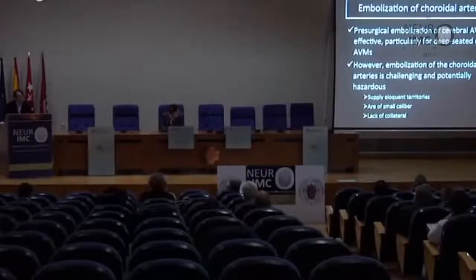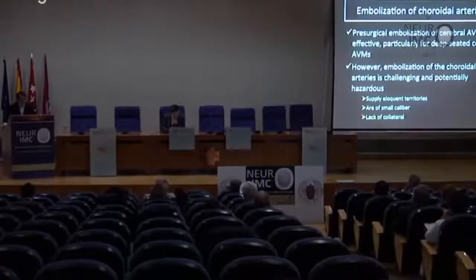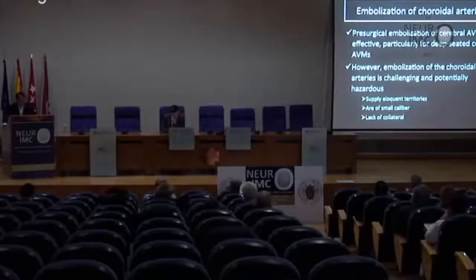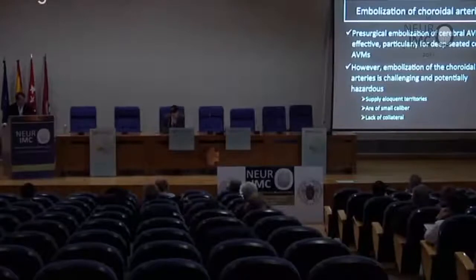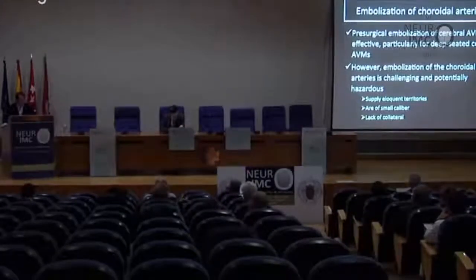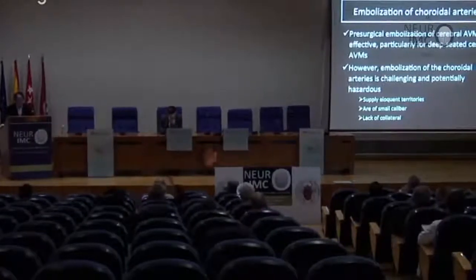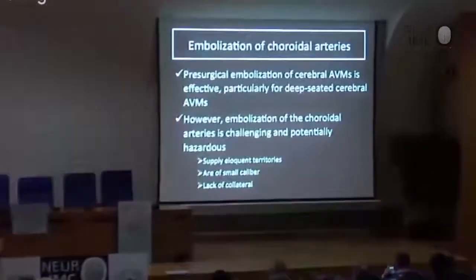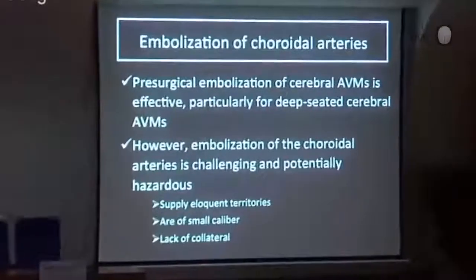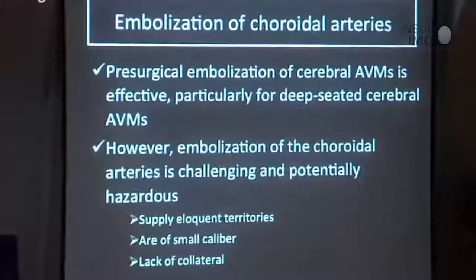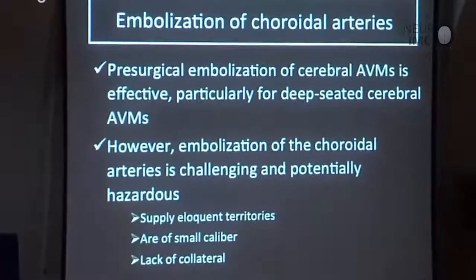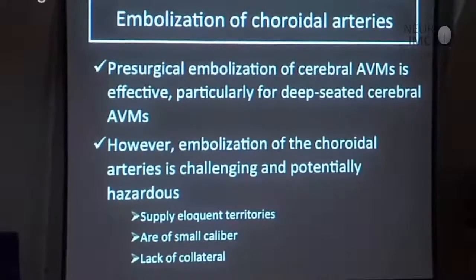Presurgical embolization of cerebral AVMs is effective, particularly for deep-seated cerebral AVMs. Because obliteration of the feeding system tends to be the last step in the surgical resection of deep-seated AVMs supplied by the choroidal arteries, presurgical embolization of these feeders could prove beneficial. However, embolization of cerebral AVMs of the choroidal artery is challenging and potentially hazardous, because they supply eloquent territories and are of small caliber and lack collateral.